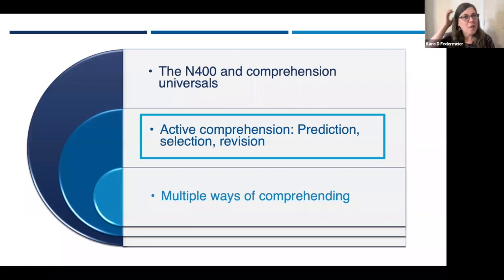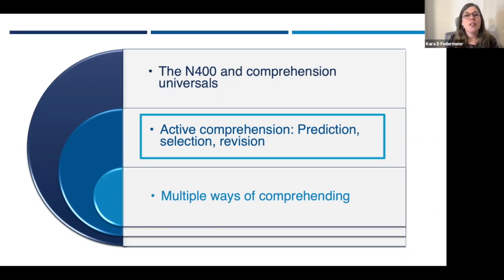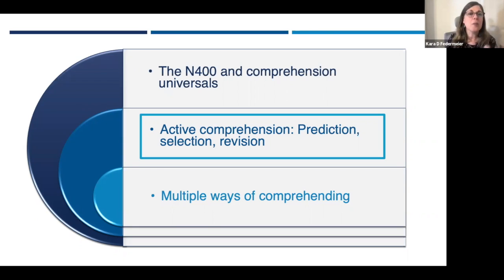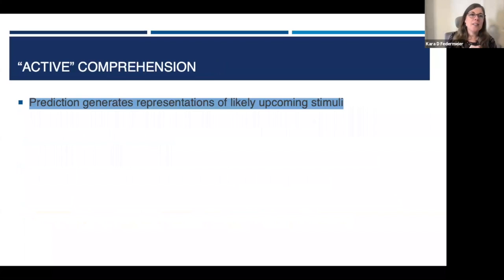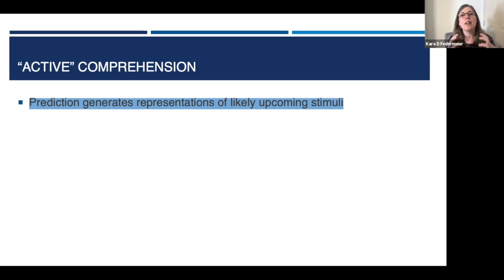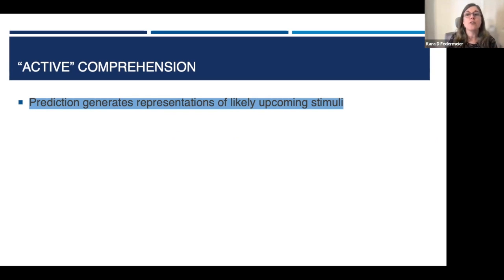Let me talk about more active processes in comprehension. Over the last couple of decades, research on language has amassed evidence for active processes including prediction. I should define what I mean by prediction, as the term has come to be used very widely and sometimes variably. Prediction arises from a change in the processing dynamics of the comprehension network — among other things, this change allows the system to generate and pre-activate likely upcoming information, for example a probable next word in a sentence. As a result, the system behaves as if it has encountered a stimulus it hasn't actually received yet — and which it might never encounter, because predictions can be wrong.